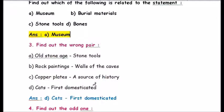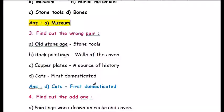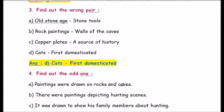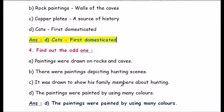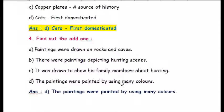Question number three: find out the wrong pair. a) old stone age — stone tools, b) rock paintings — walls of the caves, c) copper plates — a source of history, d) cats — first domesticated. The wrong pair is option d) — cats were not the first animal to be domesticated; it was dogs. All the others are correct.